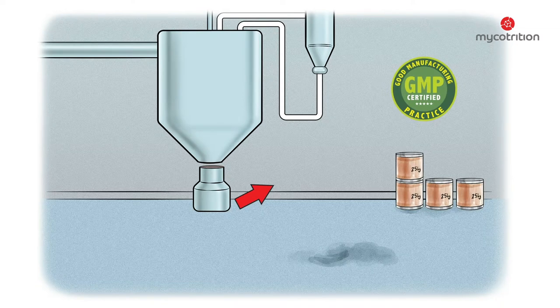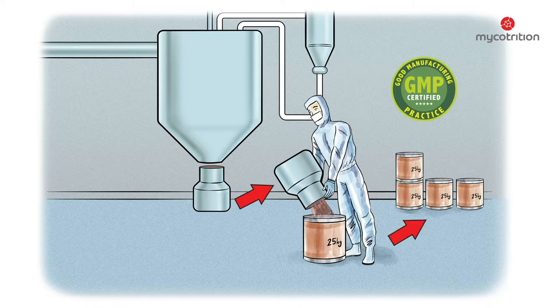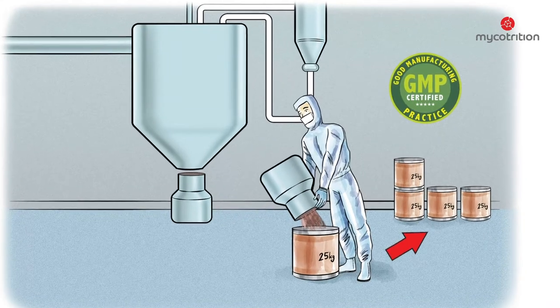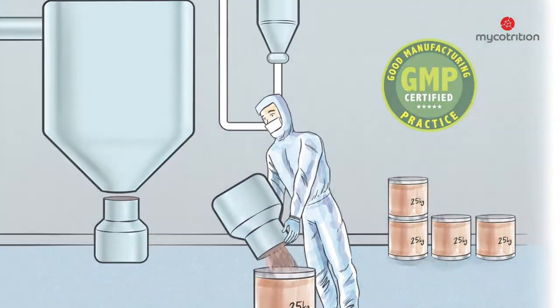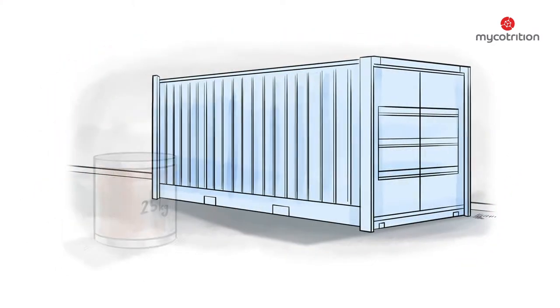The mushroom extract is now filled into containers through a valve at the bottom of the tank. These containers are then prepared for shipping. This is done in the hygiene production area under GMP conditions. The containers are shipped to Germany, arriving 4 to 6 weeks later.